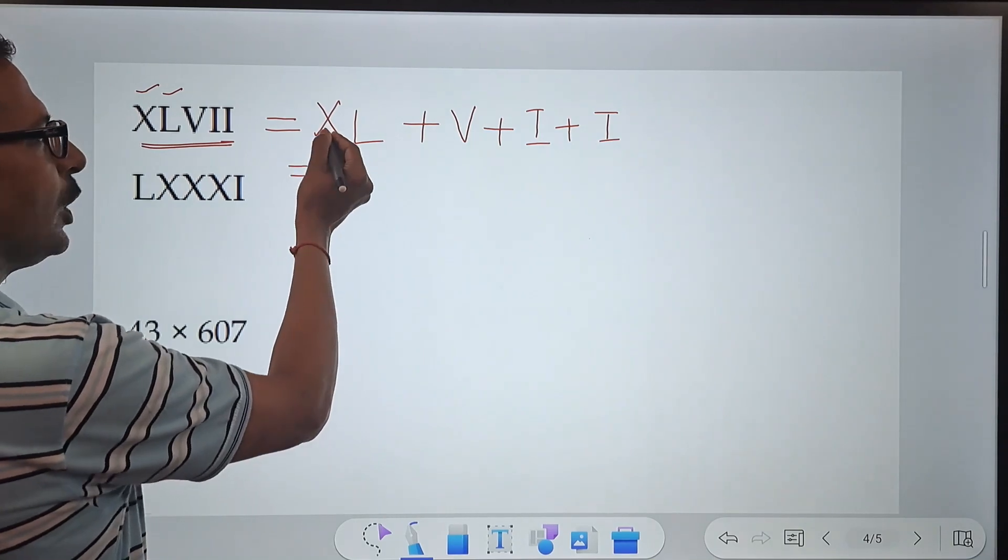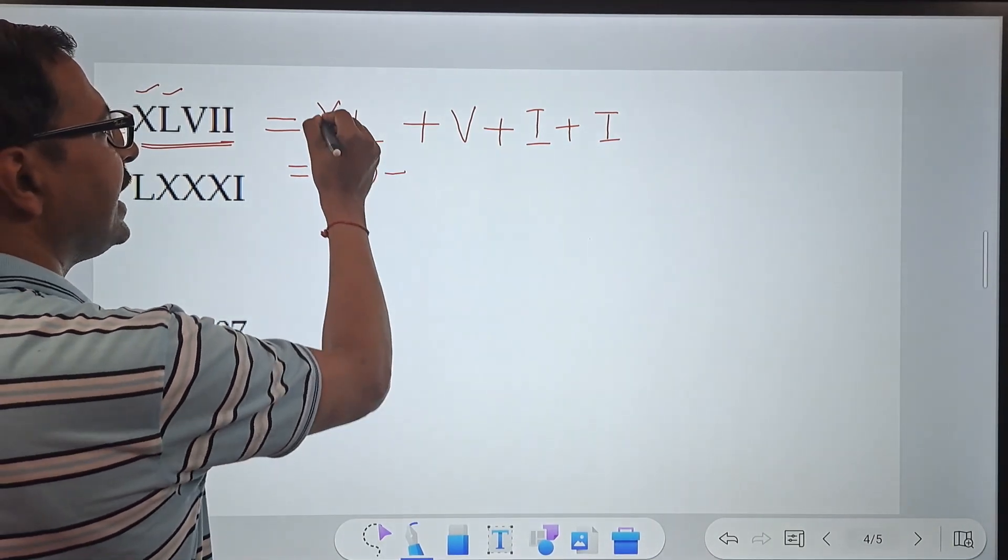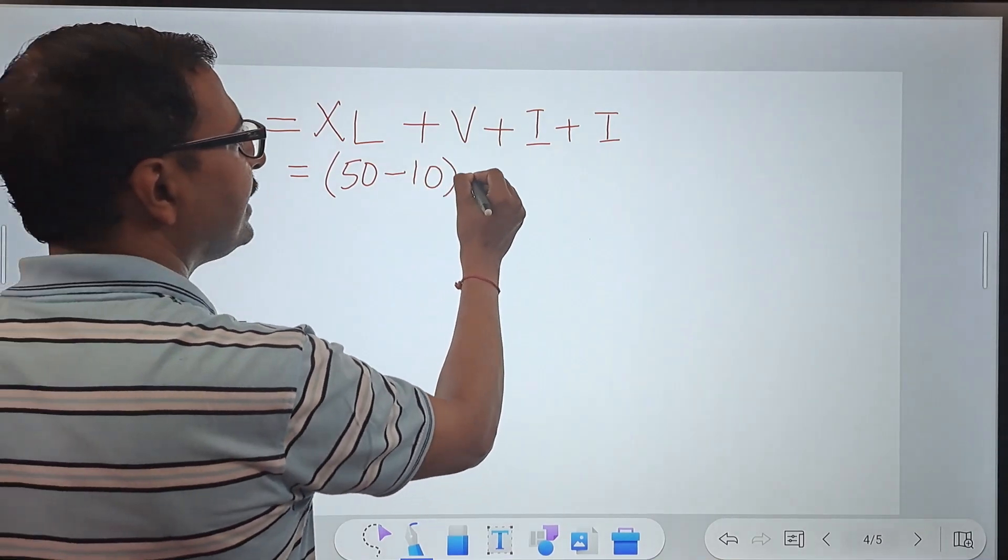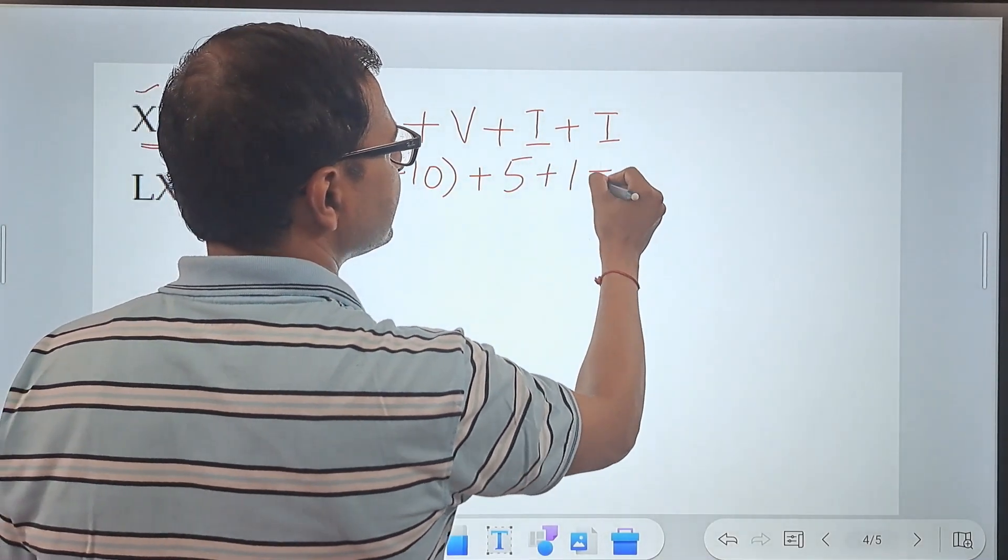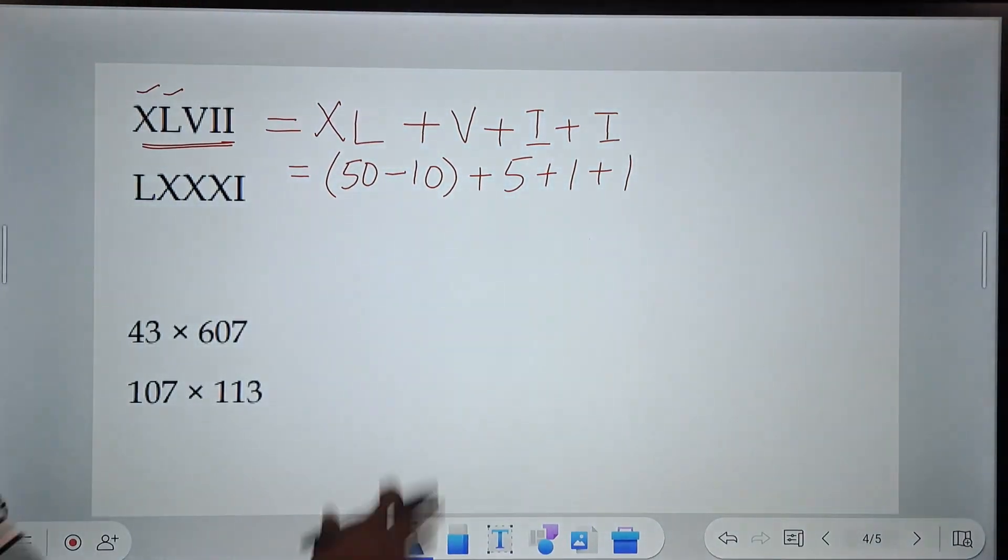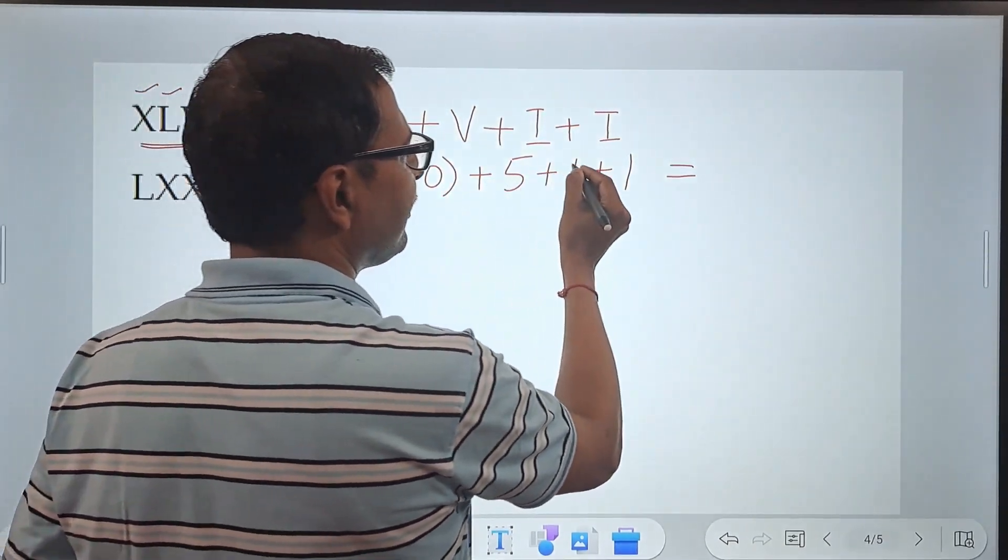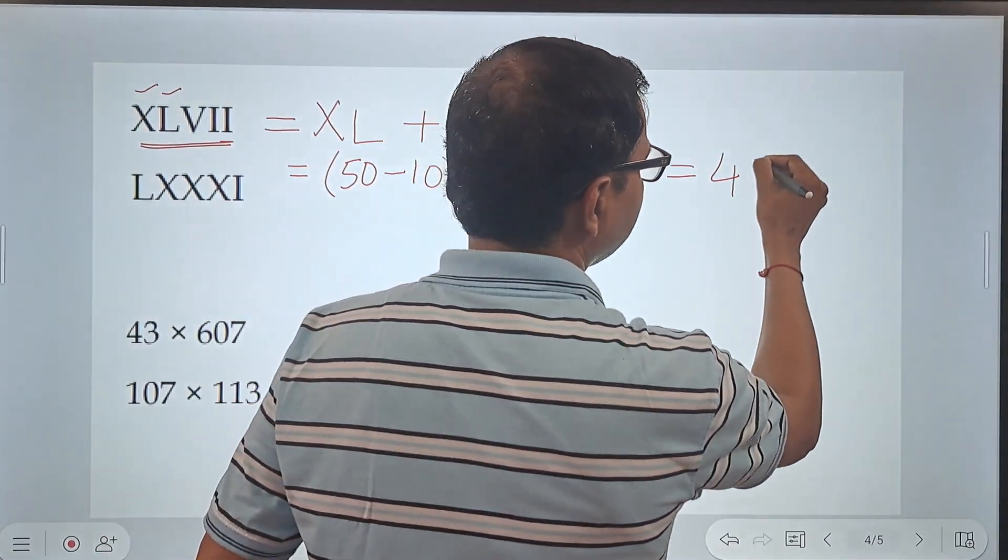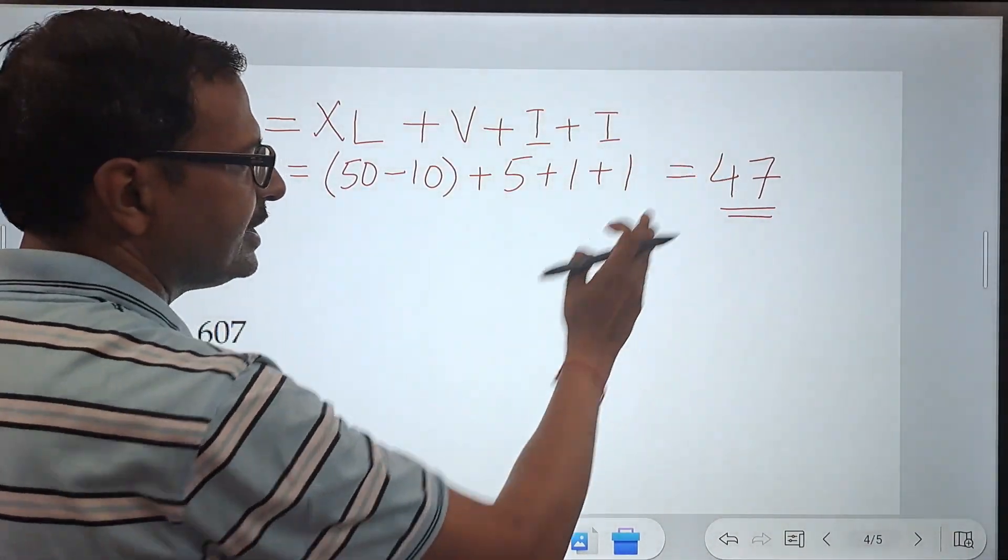Now, X is smaller than L. So I will write L 50 minus X 10. And then remaining part, V is 5 and this is 1 and this is 1. Now, once you do this, your number is in the next step. This is 40 plus 5, 45, 46, 47. And therefore, this is the Roman equivalent of 47.